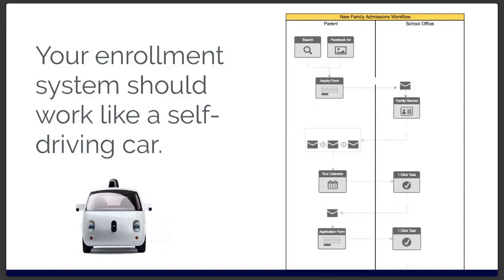There are a lot of software options out there for this, and I highly suggest taking the time to learn how to use them — or find a tech-savvy parent volunteer who can build marketing automation systems for you. You want to build these things because the admissions process can be so busy, and if it's not well set up it's easy for great prospective parents to fall through the cracks and end up at another school because that school responded to them faster.